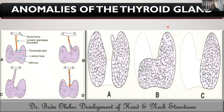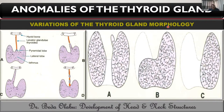The third category of thyroid malformations are largely variations rather than congenital malformations per se. These include presence of a pyramidal lobe, absence of the isthmus, absence of one lobe while the isthmus is present, or absence of one lobe and the isthmus so that only one lateral lobe is present. All of these are considered variations in thyroid morphology.